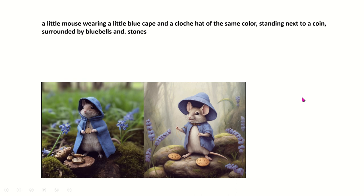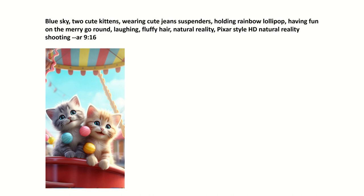Then we got the little kittens — love that. Here we did an aspect ratio of 9 to 16. We have Pixar style, natural reality, laughing, fluffy hair, having fun on the merry-go-round — pretty much what we asked for is what we got. Another way you can get really crisp, clean images is to put in things like natural reality or Pixar style to get what you're looking for.